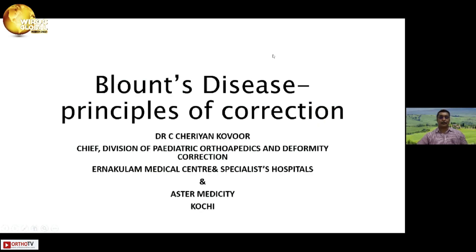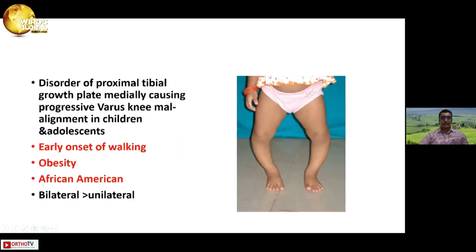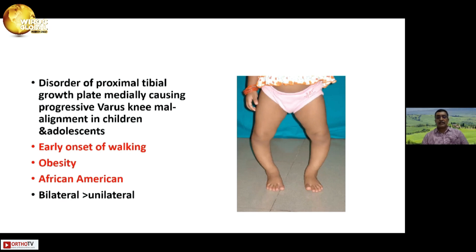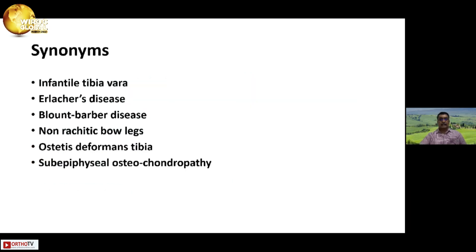Blount's disease is one of my favorite topics, and I have been doing this for a long period of time. Blount's disease is a disorder of the proximal tibial growth plate medially, causing progressive varus knee malalignment in children and adolescents. It is mostly associated with early onset walking, obesity, and African-American children are more prone to it. Bilateral presentation is more common than unilateral.